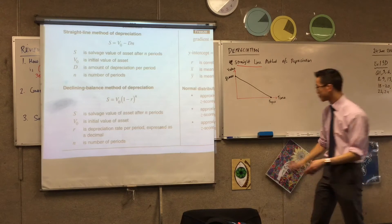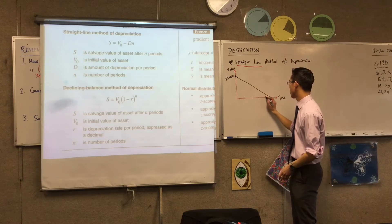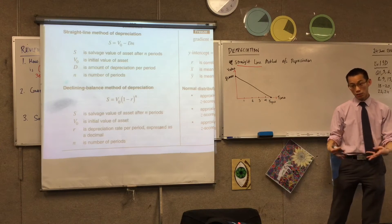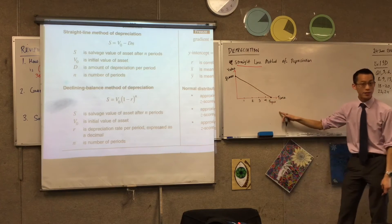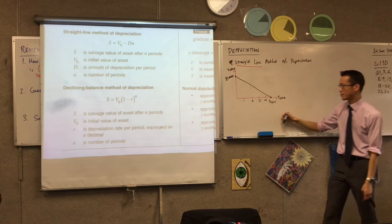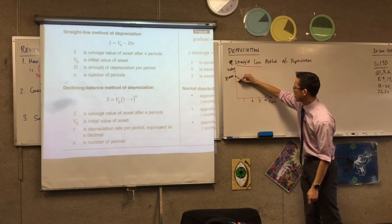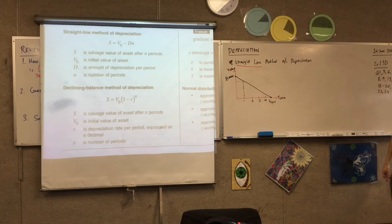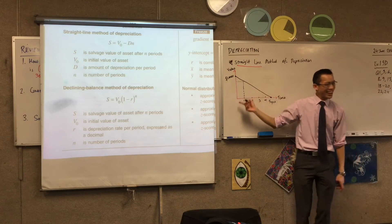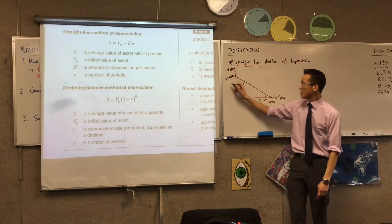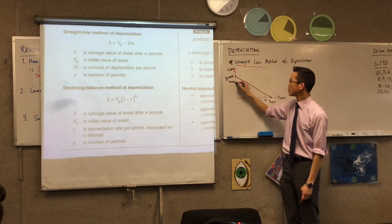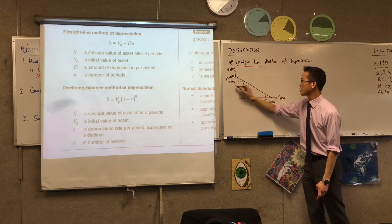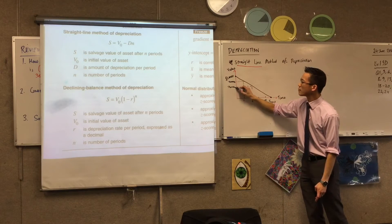So going one, two, three, four — every year, how much am I losing? The answer is $50,000 over five years, which is $10,000 every year. So for instance, what is it after one year? You can see there's my $40,000. What is it after two years? You can see there's my $30,000, and you can keep going down.